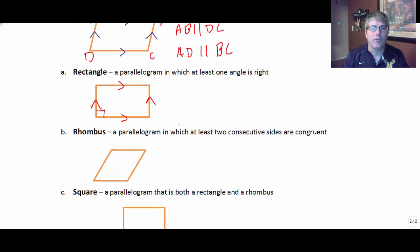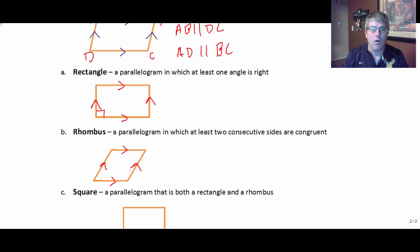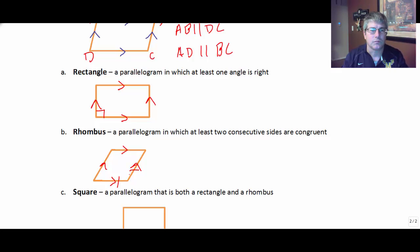A rhombus is also a parallelogram, so the opposite sides are parallel, in which at least two consecutive sides are congruent. Something like that is a rhombus — it's a parallelogram where both pairs of opposite sides are parallel, and then we have two consecutive congruent sides. That's all we need for a rhombus. Now, you may know that all four sides are congruent, but again, that's for a later video.